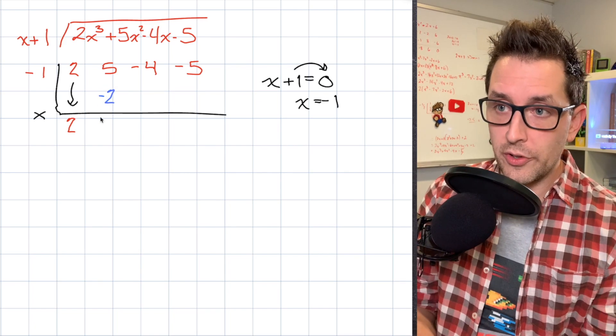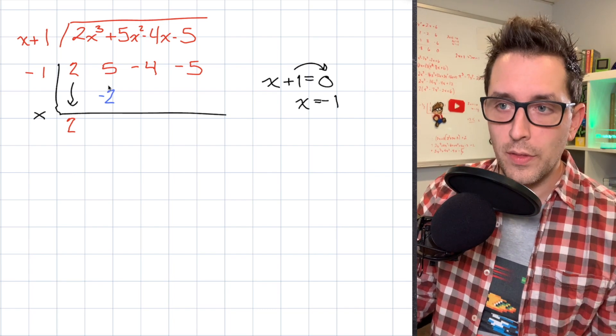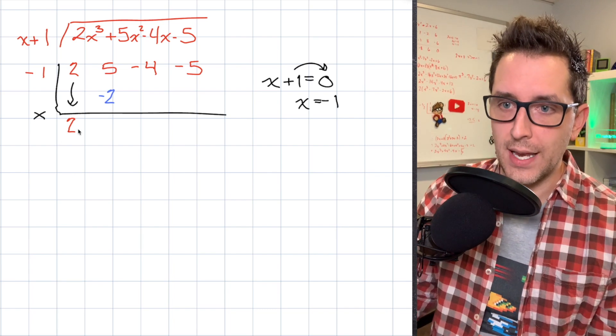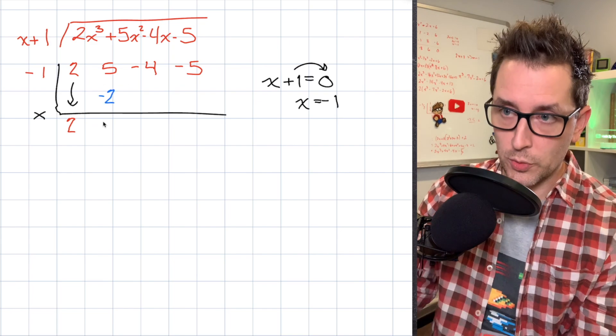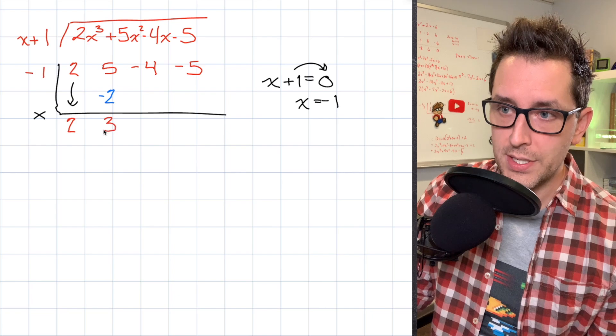Now the next thing I want to do to start completing my table is I want to add straight down this column. I want to add 5 plus negative 2. And I'm going to place that result directly below. So 5 plus negative 2 I know is going to be 3. So I'm going to place the 3 right there.